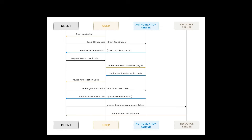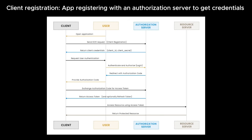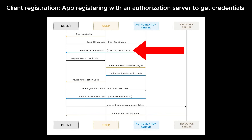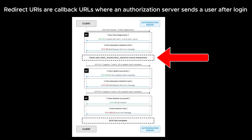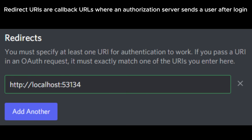Another critical part of OAuth is client registration and secrets. Before a client app can use OAuth, it must register with the authorization server and receive a unique client ID, and for confidential clients, a client secret. This ensures that only known, approved clients can request tokens. Combined with redirect URIs, this prevents redirect URI manipulation attacks, where a malicious actor tries to intercept authorization codes or tokens by tampering with redirect endpoints.